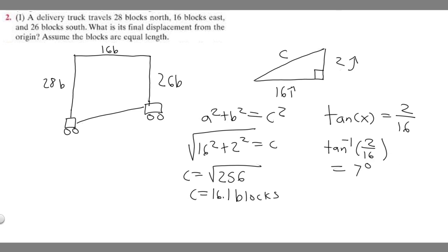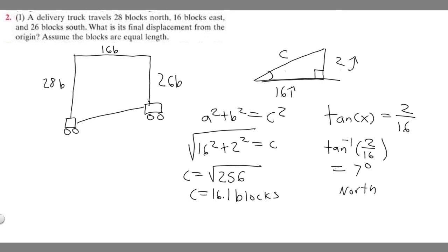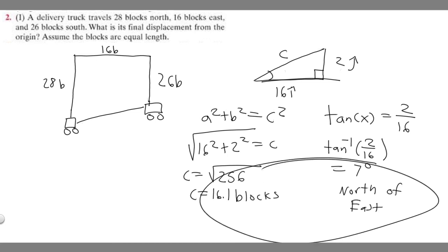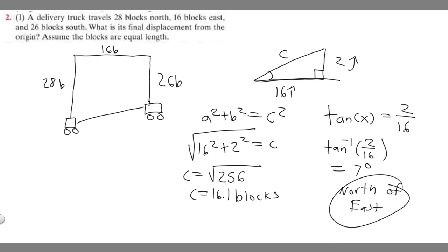But you're not done yet. You get 7 degrees, but we need to explain the direction. Keep in mind that this is north and this is east, so we're going 7 degrees up from east — it's going to be 7 degrees north of east. So we write 7 degrees north of east. So 16.1 blocks and 7 degrees north of east are going to be your answers.